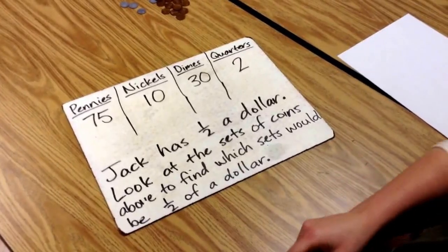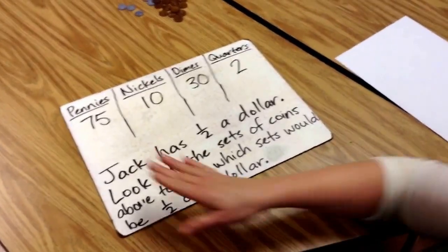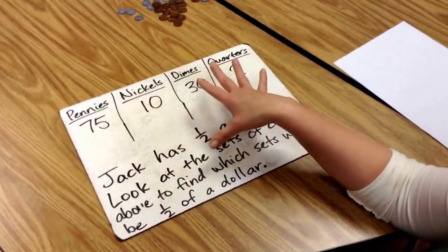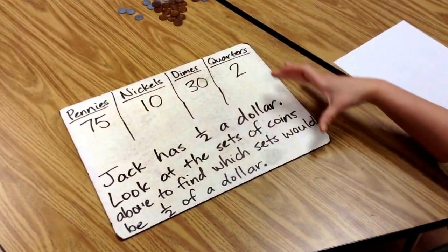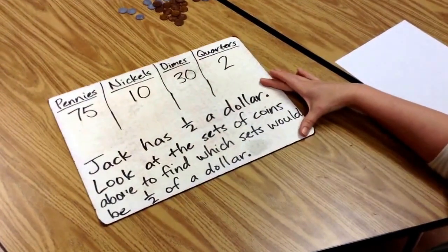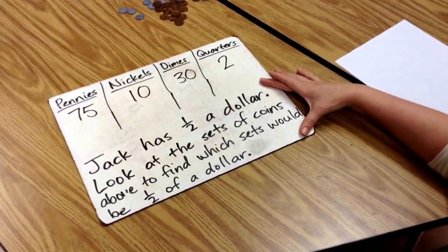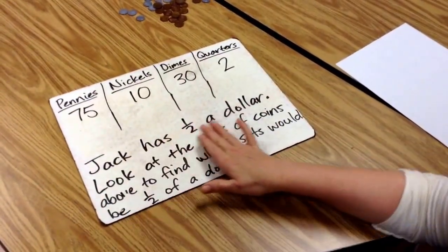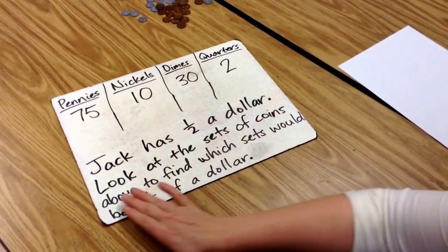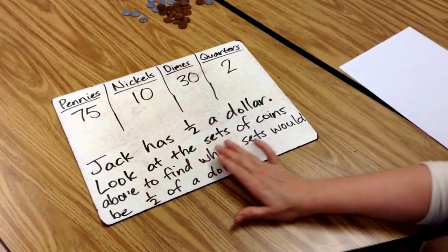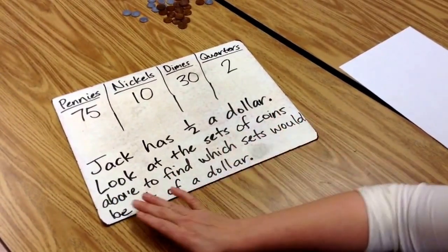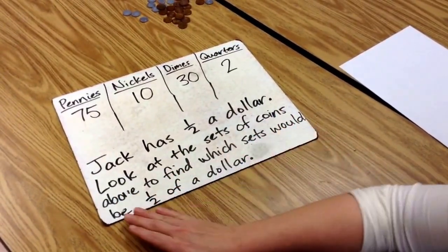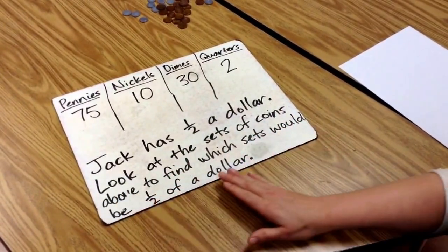We are going to put our knowledge of fractions and money together to solve a problem. So let's look at the problem. Jack has half a dollar. Look at the sets of coins above to find which sets would be half of a dollar.